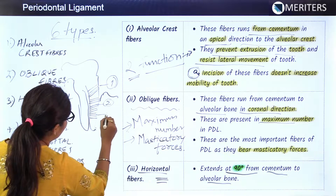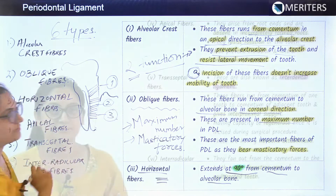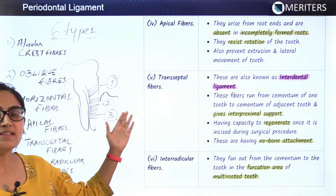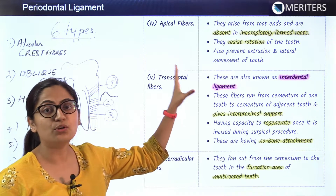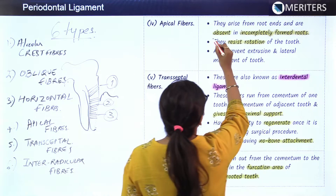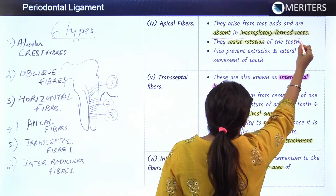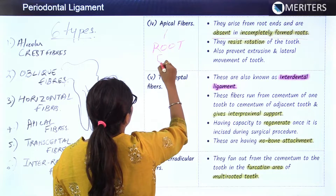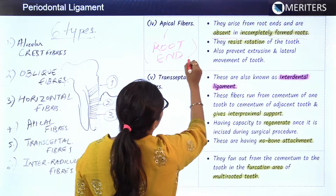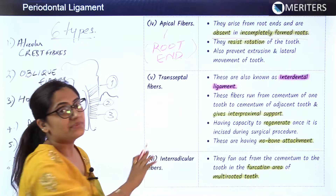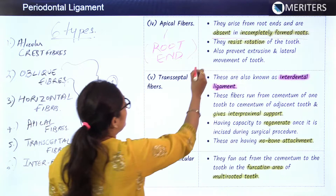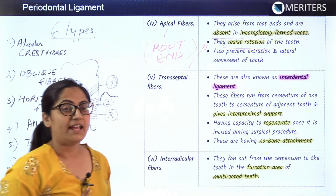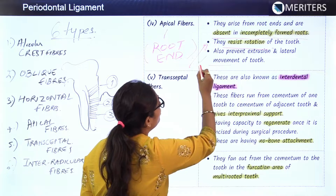The fourth fiber is the apical fibers. As the name suggests, they arise from the root end and are absent in incompletely formed roots. Their main function is to resist the rotation of the teeth, and they also prevent extrusion and lateral movement.